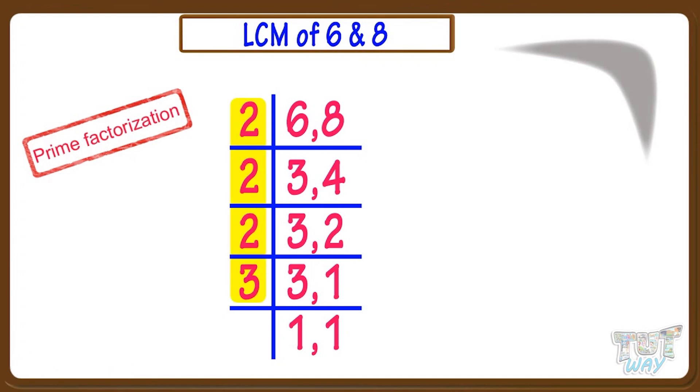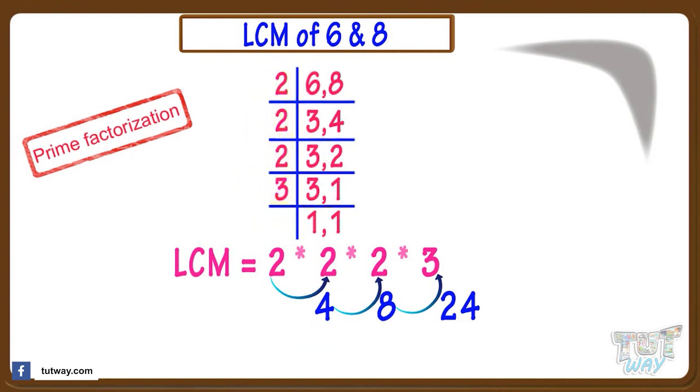Now the next step is, take all these numbers which we use to divide the numbers and multiply them. So 24 is the LCM of 6 and 8.